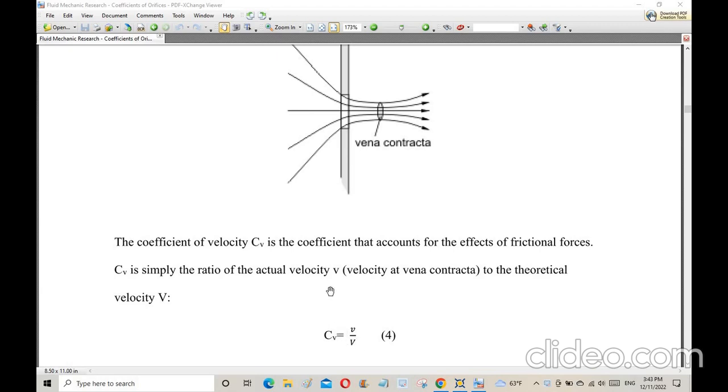The actual velocity is the velocity at vena contracta, which is the section of the jet that has the smallest area and the smallest pressure.